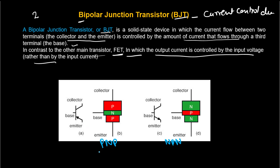There are two types of BJT: PNP and NPN. In PNP, we have two P-regions with one N-region sandwiched in between. The middle region is where we connect our base terminal. The broader region is called our collector, and the other region is the emitter. In BJT we have three regions: emitter, base, and collector. The base is our middle region, the collector is the broadest region, and the base is thin.